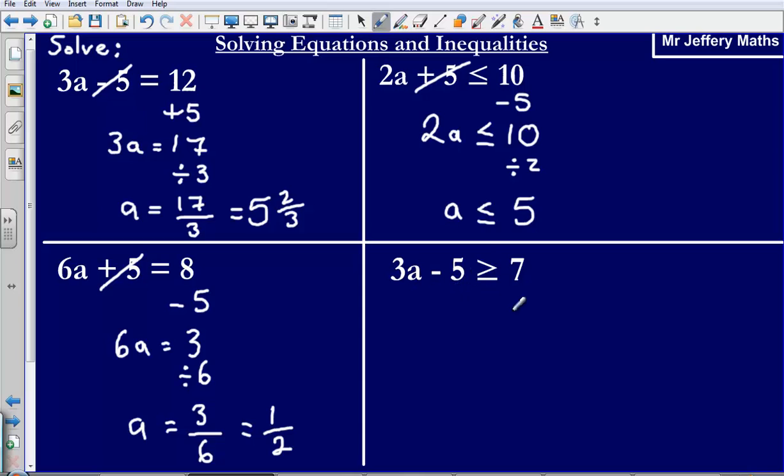Last one, I've got 3A minus 5 is greater than or equal to 7. So to get rid of that minus 5 I'm going to add 5. That leaves me with 3A is greater than or equal to 7 plus 5 which is 12.